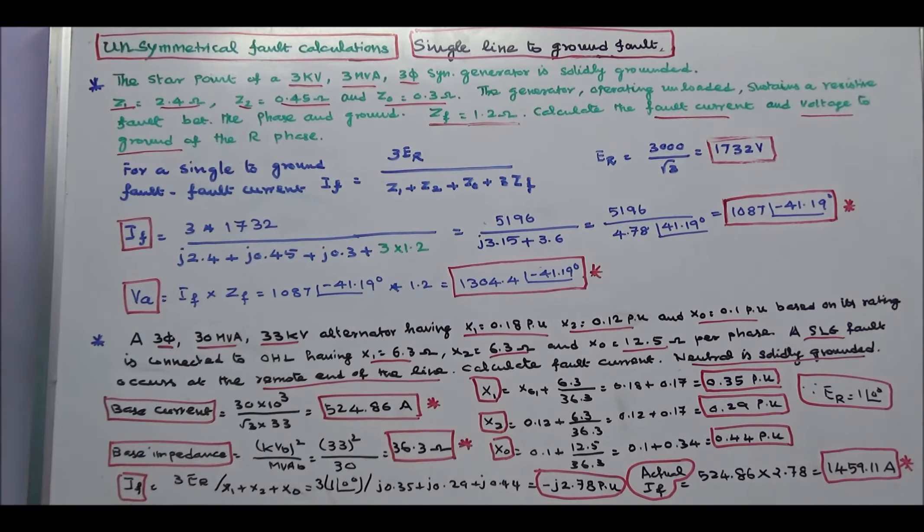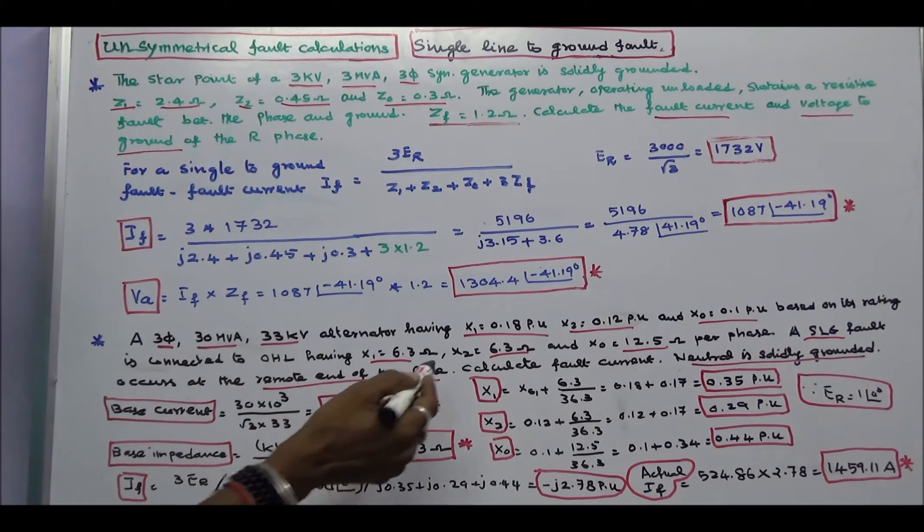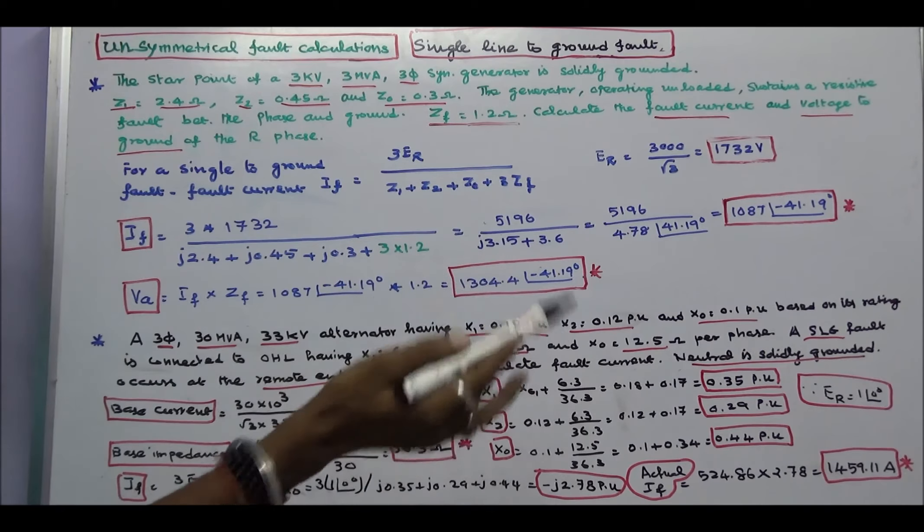A single line ground fault occurs on the remote end of the line. The question is calculate the fault current. Neutral is solidly grounded.